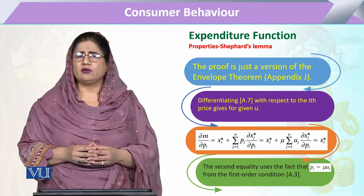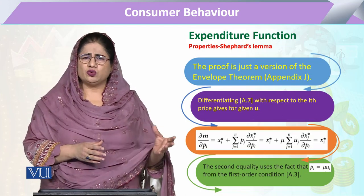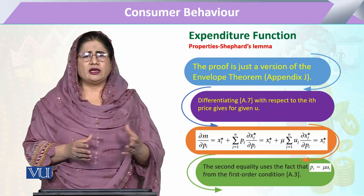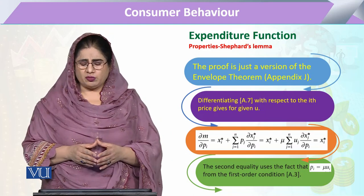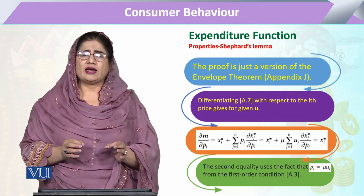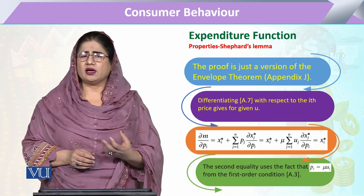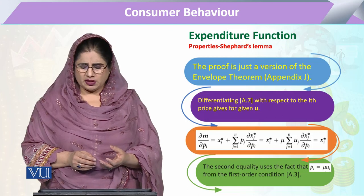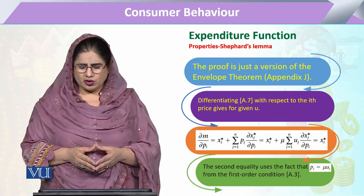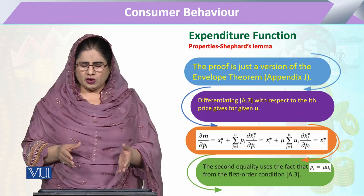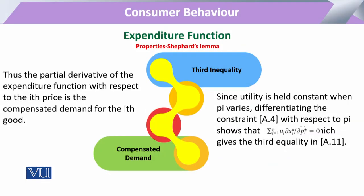कीमत के बदलने से हमारे expenditure पे क्या फर्क पड़ता है, अगर हम उसको चेक करते हैं, तो हमारे सामने जो formula आता है वह वही है जो हमने substitution effect और Slutsky equations के दौरान किया हुआ है। यहाँ जो unique form नज़र आती है वो यह है कि there should be an x* amount — that unique amount that will enable the consumer to have the minimum expenditure.